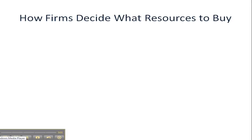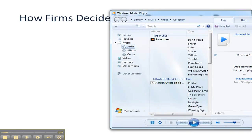Hi folks, this video is about how firms decide what resources to purchase. This will be the first of a two-part video. In this one we are going to figure out marginal product or marginal physical product, MPP, which should be a review because we've done that when we started our unit on theory of the firm. And then we're also going to learn how to figure out something called MRP, which is marginal revenue product — the first step towards analyzing how much resources firms should buy.